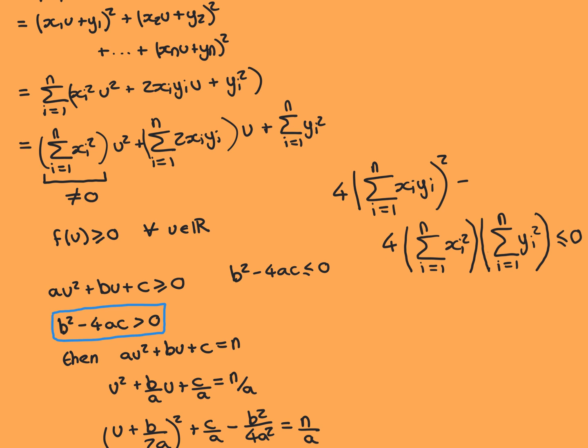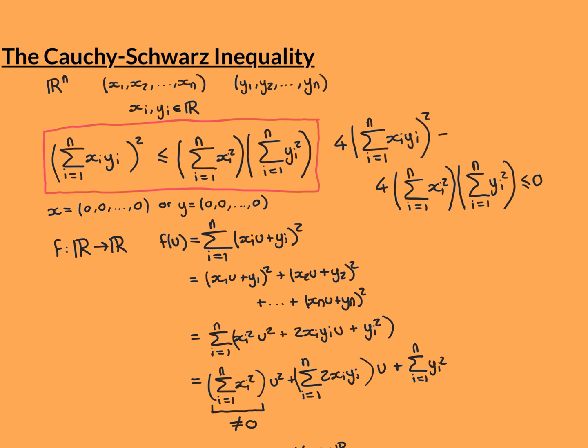Now cancel the 4 by multiplying through by a quarter — a positive number, so the inequality sign doesn't change. Bring the second term to the other side, and we get (Σxᵢyᵢ)² ≤ (Σxᵢ²)(Σyᵢ²), which is the Cauchy-Schwarz inequality. And with that, we finish this video. Thank you for watching.